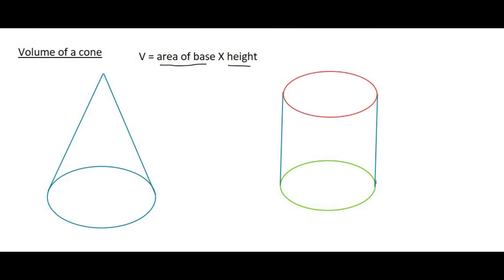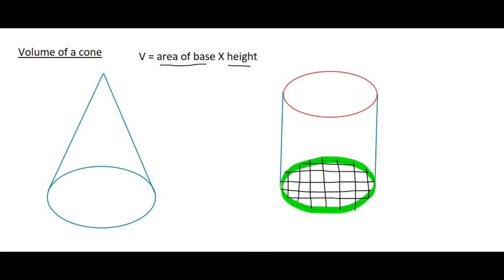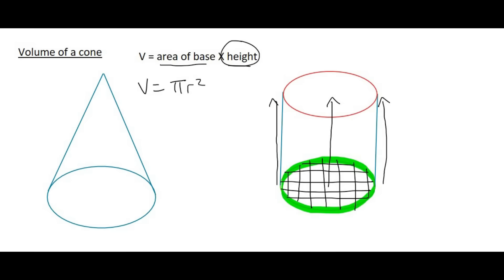If we were looking at a cylinder, which we have here on the right, then we could use the base as the circle at the bottom. What we would do is drag that circle up to the very top, and that length would be the height. So for that cylinder, the volume is equal to the area of the base, which is a circle, so that would be pi r squared, times the height.